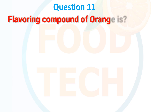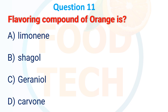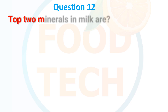Question 11: The flavoring compound of orange is — A. Limonin, B. Safrole, C. Neon, D. Carbohydrate.